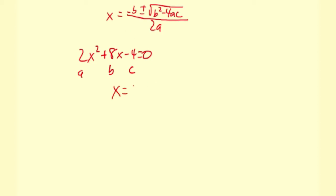X equals negative 8 plus or minus the square root. It'll be 8 squared minus 4 times 2, which is a, times negative 4, which is c, all divided by 2 times a, which is also 2.